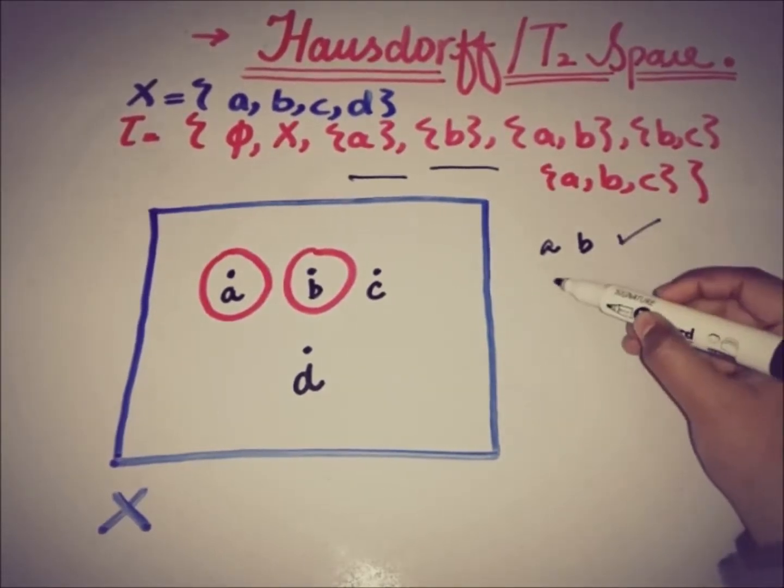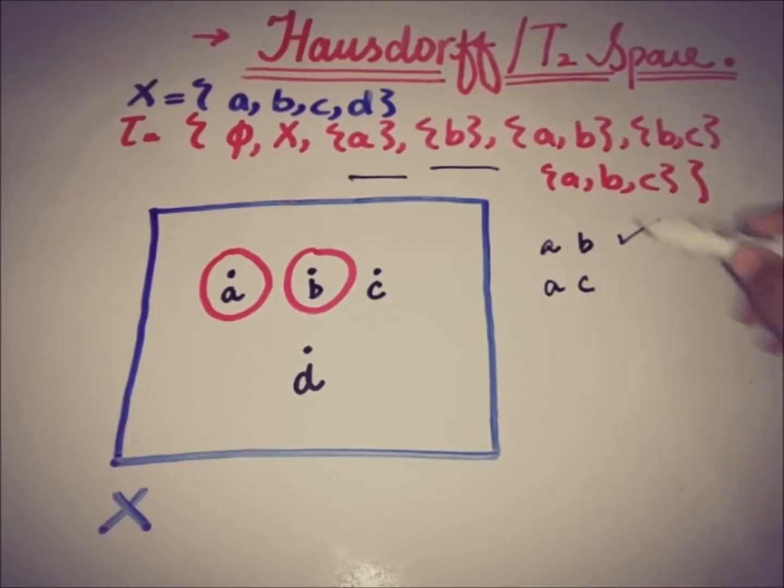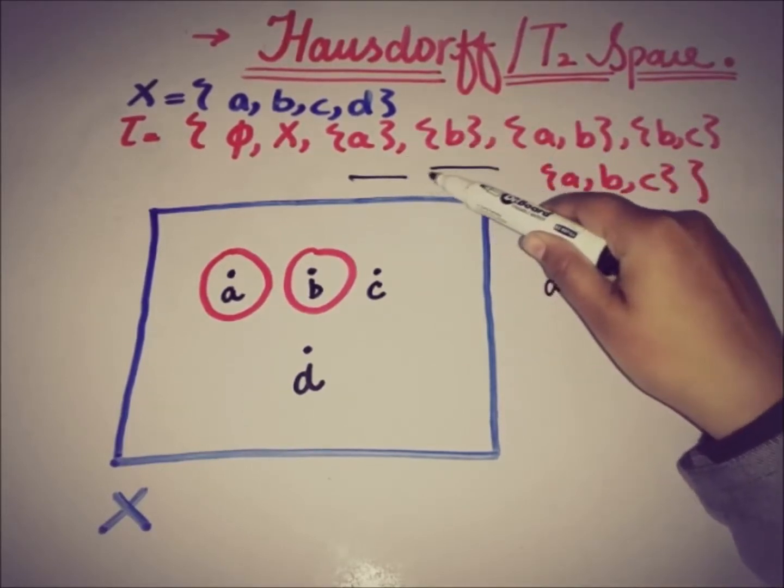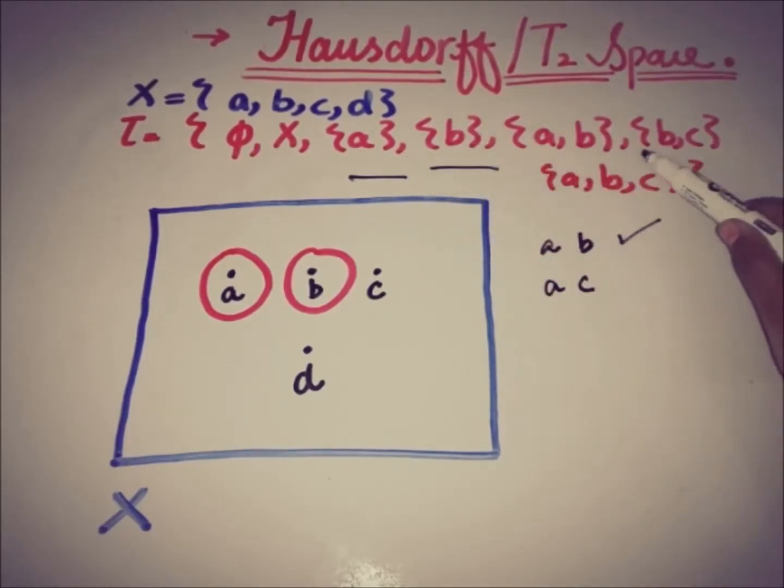If we take A and C, then we have open set A that contains A, and we have open set B,C that contains C, such that the intersection of A and B,C is empty, which can be visualized here.